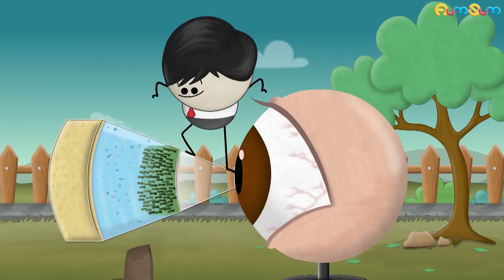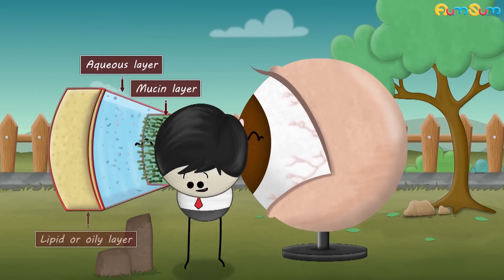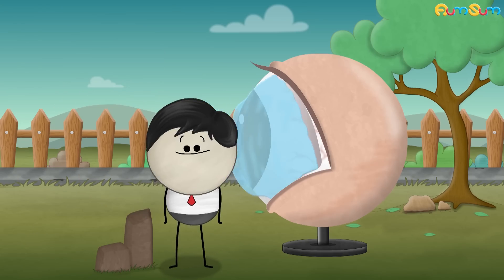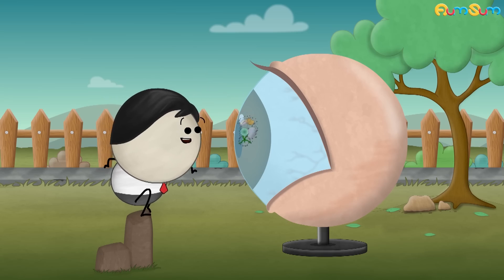The tear film mainly consists of three layers: mucin layer, aqueous layer, and lipid or oily layer. Together, these layers moisturize our eyes. They also trap dust and germs which are removed while blinking.